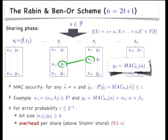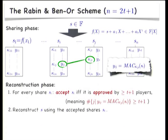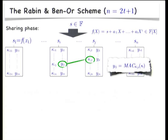The reconstruction of the Rabin and Benor scheme: the idea is to try to filter out the bad shares and use the good shares with Lagrange interpolation to get the original secret back. Specifically, a share is accepted if and only if it is approved by at least T plus one players — meaning it is consistent with the authentication tags of at least T plus one players — and then the accepted shares are used with Lagrange interpolation to compute the secret. This way, the shares of the good players will get accepted and the bad shares of the incorrect players will be rejected with high probability.